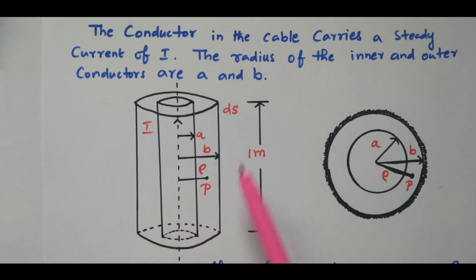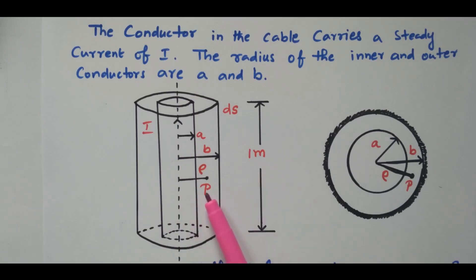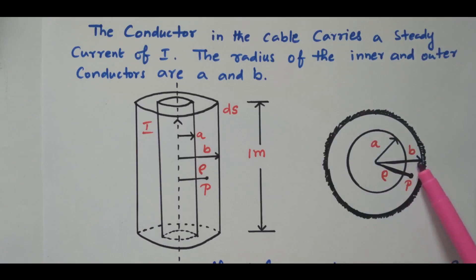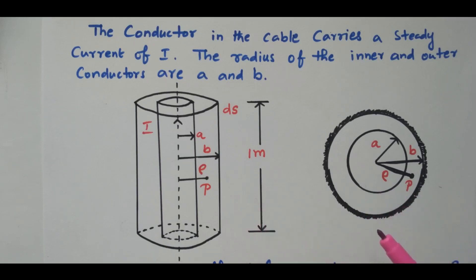We consider one point P at a distance ρ meter from the axis of the cable. The inner conductor has radius A, the outer conductor has radius B, and point P is located at a distance ρ meter. The inductance of a cable, inductance of a coaxial cable, or inductance of a cable with two conductors — all have the same derivation.